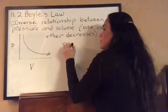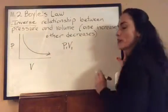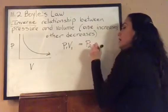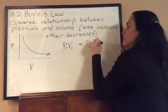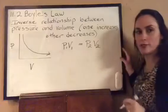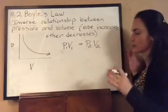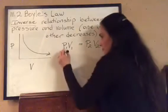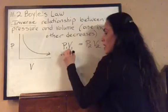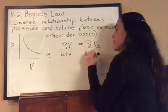The equation for Boyle's Law is P₁V₁ = P₂V₂: the initial pressure times the initial volume equals the product of the final pressure times the final volume. We compare initial and final conditions.